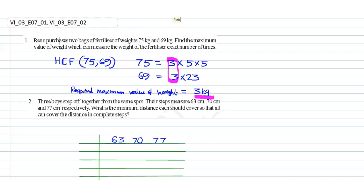Question number two: Three boys step off together from the same spot. Their steps measure 63 centimeters, 70 centimeters, and 77 centimeters respectively. What is the minimum distance each should cover so that all can cover the same distance in complete steps? In this question we have to find out the LCM of the numbers.